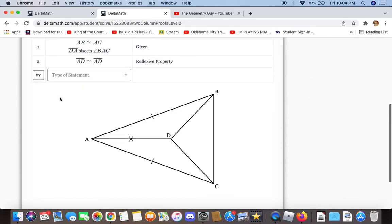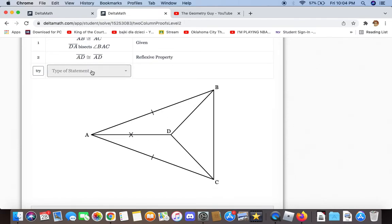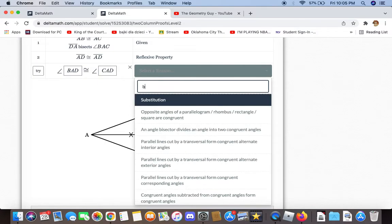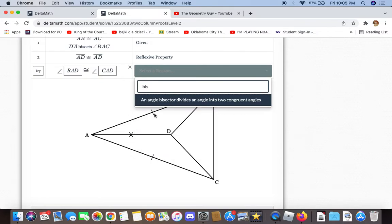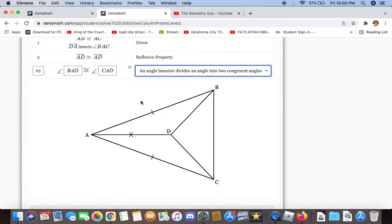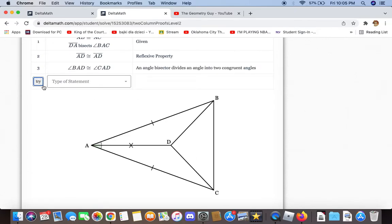We can also say, knowing that DA bisects BAC, that angles BAD and CAD are congruent to each other because an angle bisector divides the angle into two congruent angles.